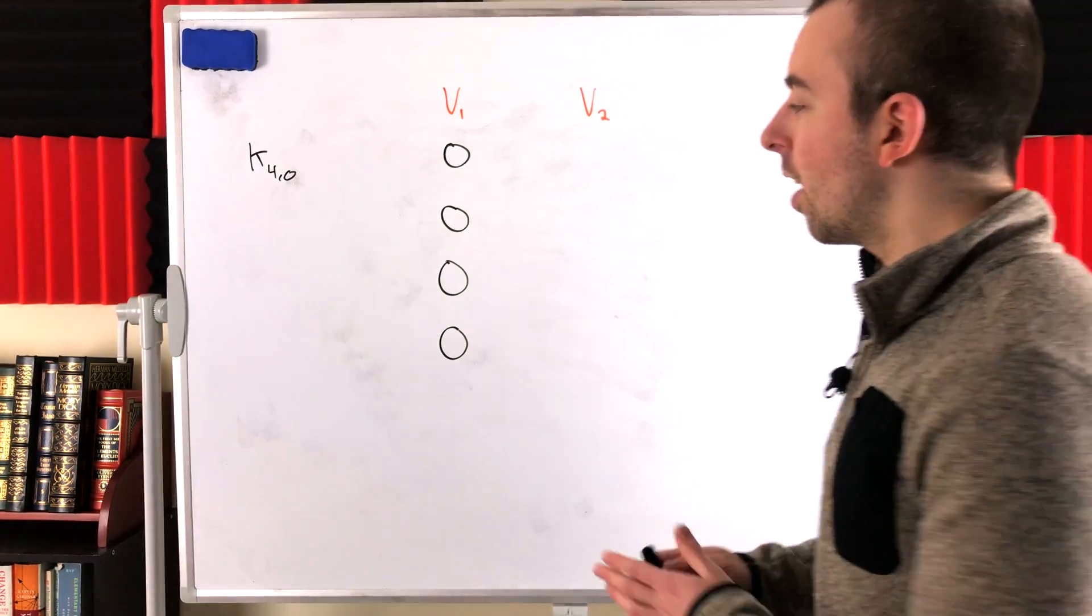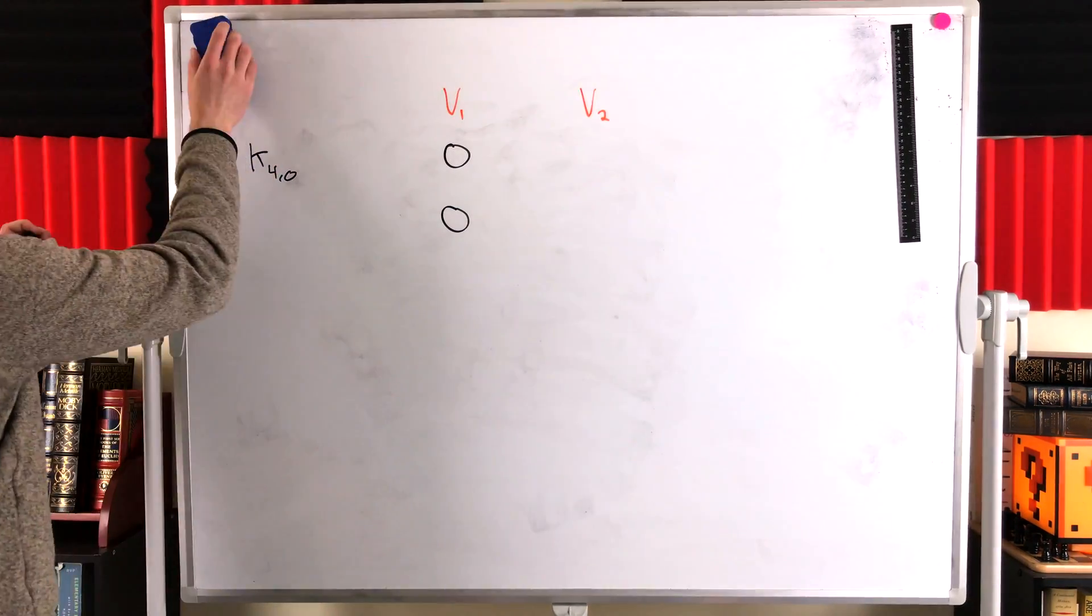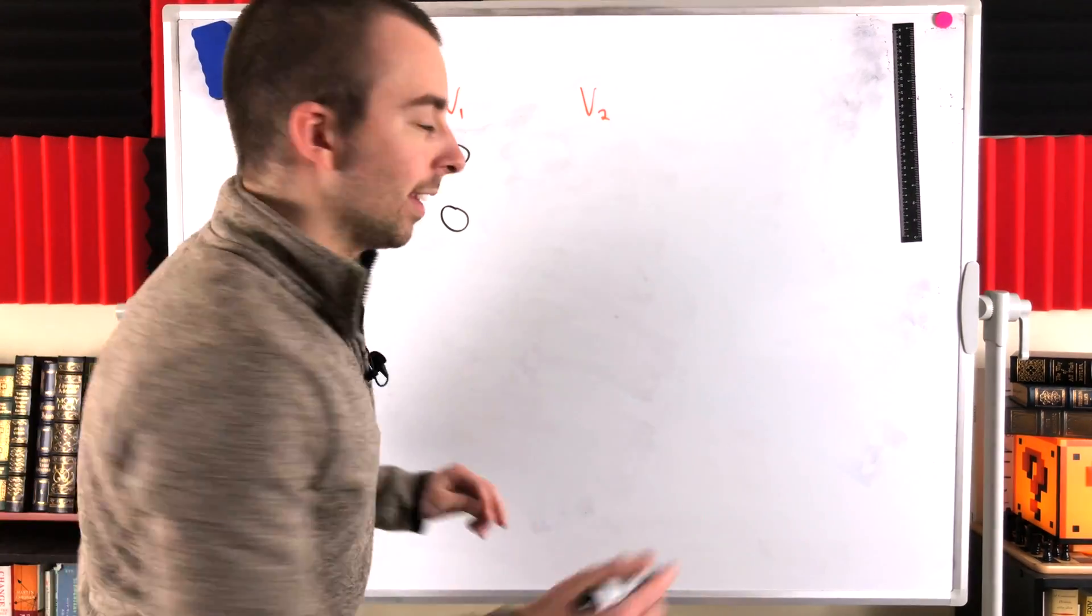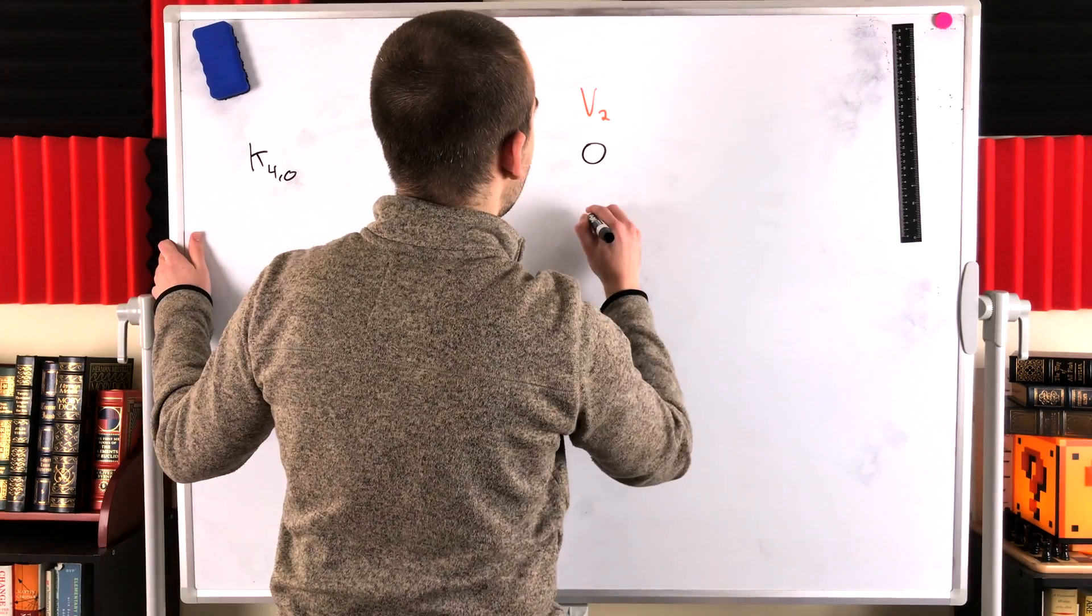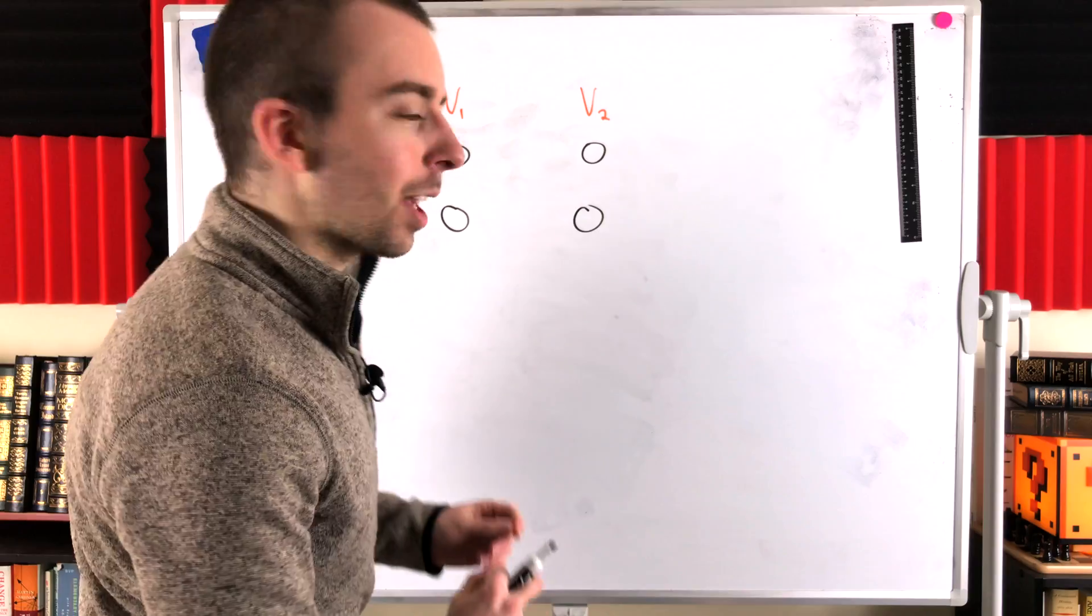Now, one point for some possible confusion, I want to clear up. You might think, okay, so we could have four isolated vertices, right? Two in V1 and two in V2. And this is a bipartite graph. And then you say, is it a complete bipartite graph?